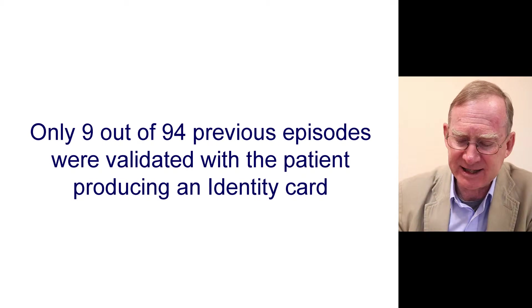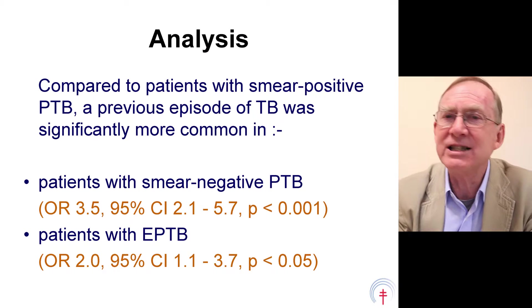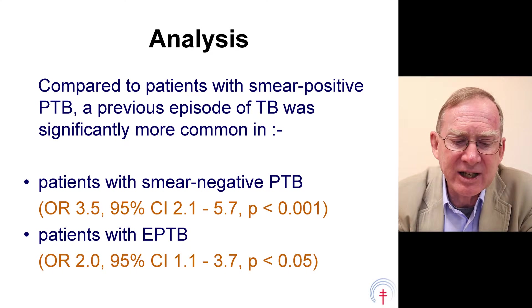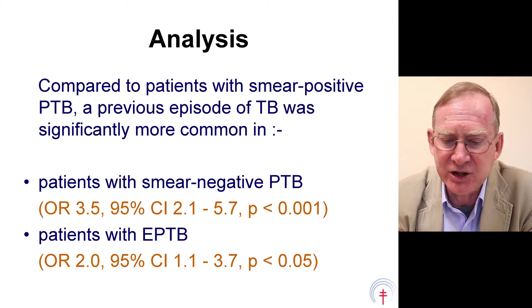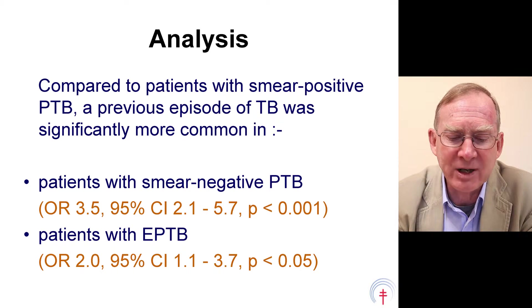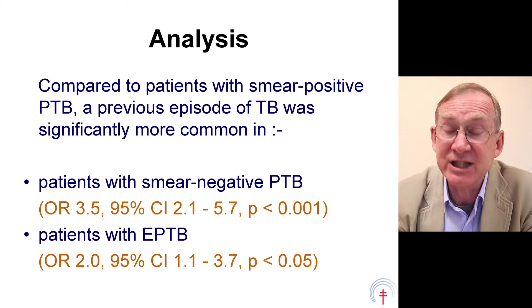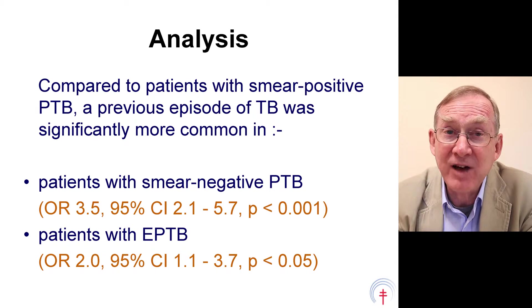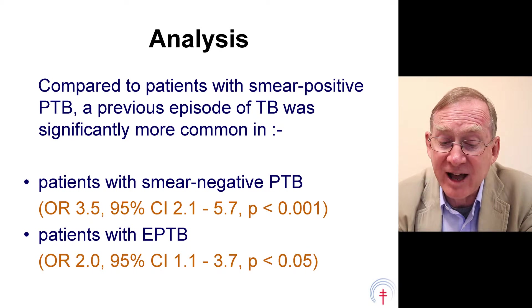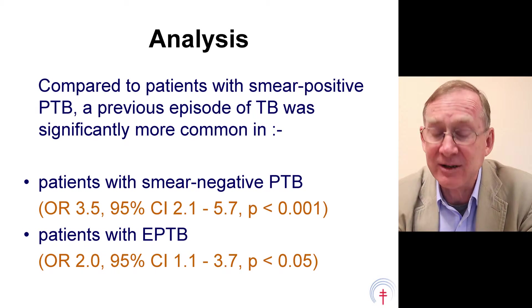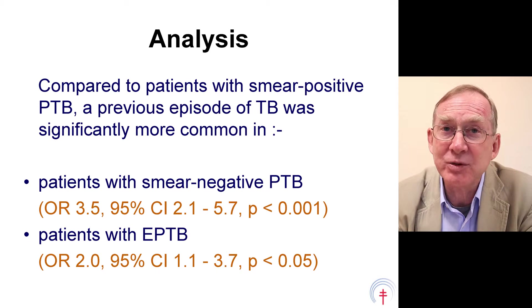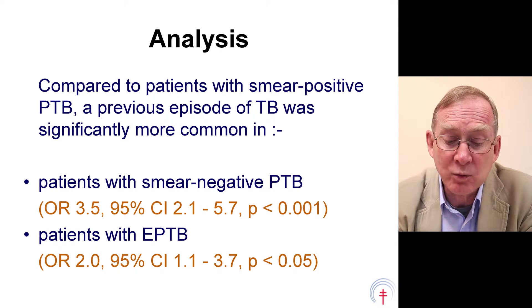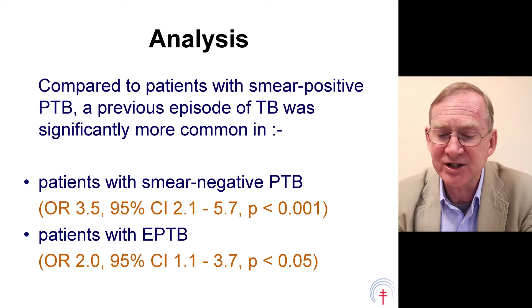We did some simple statistics. Compared to patients with smear-positive pulmonary TB, a previous episode of tuberculosis was significantly more common in patients with smear-negative PTB — odds ratio 3.5, 95% confidence interval 2.1 to 5.7, highly significant. It was also more common in patients with extra-pulmonary TB — odds ratio 2.0, 95% confidence interval 1.1 to 3.7, also significant.